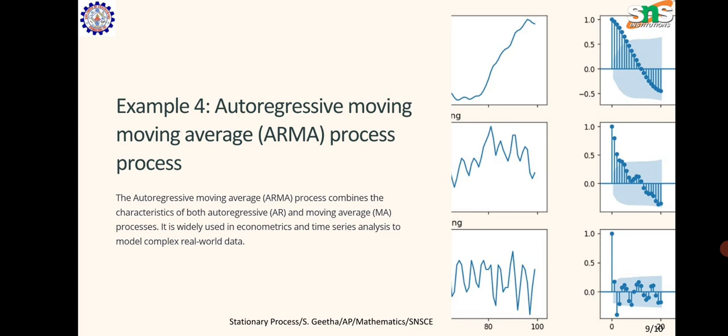Example 4: Autoregressive moving average (ARMA) process. The ARMA process combines the characteristics of both autoregressive and moving average processes. It is widely used in econometrics and time series analysis to model complex real world data.